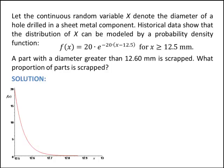Let the continuous random variable x denote the diameter of a hole drilled in a sheet metal component. Historical data show that the distribution of x can be modeled by a probability density function. So here's the probability density function: f of x is given by 20 times e to the negative 20 times x minus 12.5.